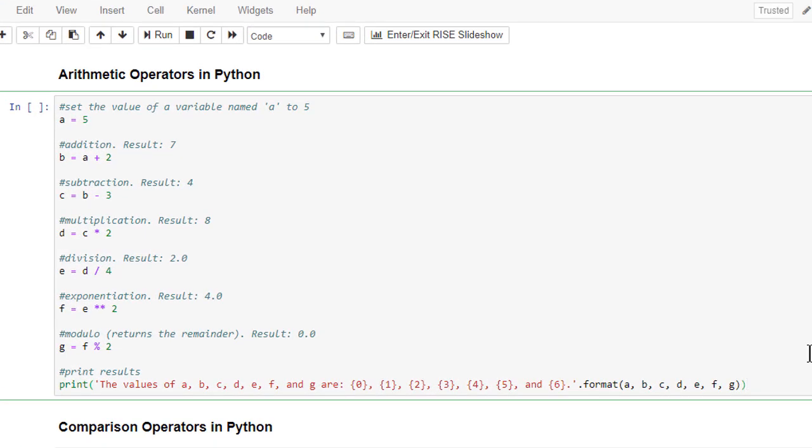This code cell replicates all of the examples that we just discussed. We begin by declaring a variable named a and setting its value equal to 5, and then proceed to use our arithmetic operators to perform addition, subtraction, multiplication, division, exponentiation, and modulo operations. We then use the print function to display the results of all of these operations on the screen.